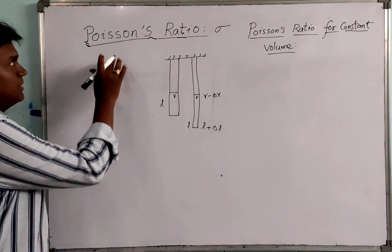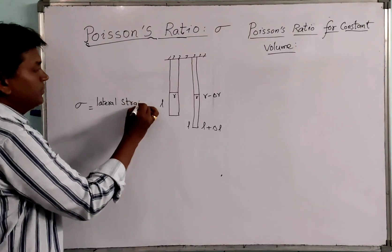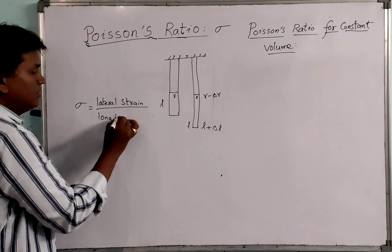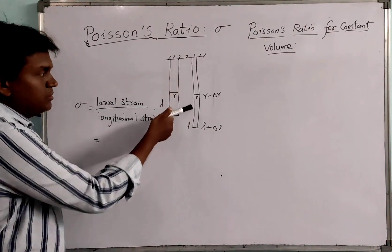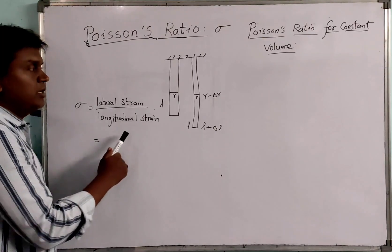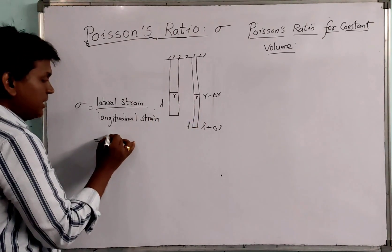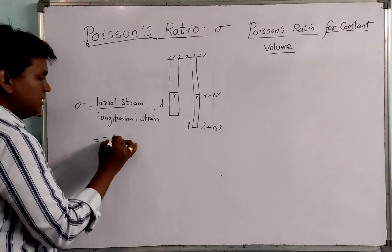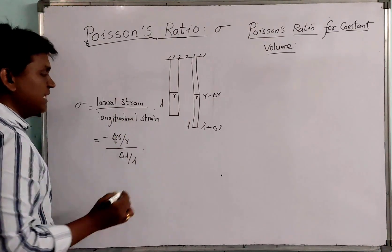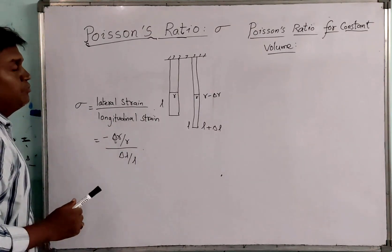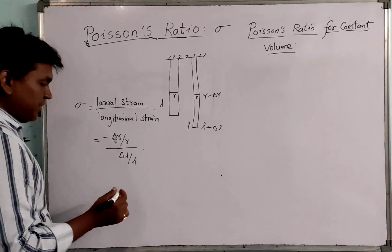So, we can say that Poisson's Ratio sigma is equal to lateral strain divided by longitudinal strain. The longitudinal strain is the lengthwise increase, and lateral strain is the decrease in radius. Lateral strain is minus delta R by R, and longitudinal strain is delta L by L.